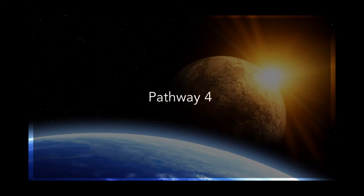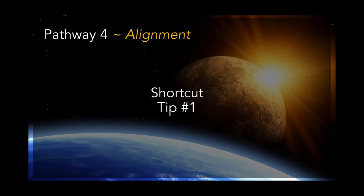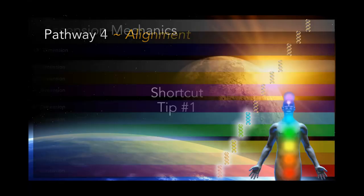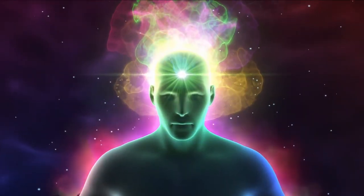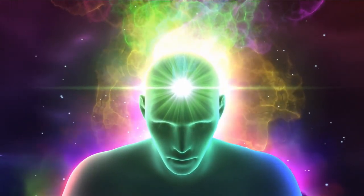Pathway number four: Alignment. Shortcut number one — if you're trying to achieve alignment, this is of course associated with activating not only your fourth DNA strand but your fifth and sixth DNA strand in particular, to allow the sixth dimensional current into your body and activate your third eye — otherwise known as your soul center. That is only going to happen if you come into alignment with your soul. When you do, your soul naturally aligns with the spirit, your spirit center opens, and that becomes the conduit to those higher levels of awareness.